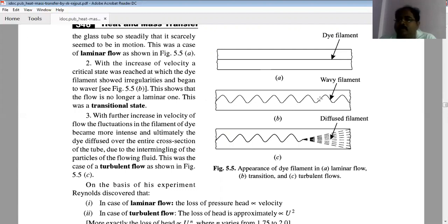This is the transitional state. When we completely open the mouth of the valve, the turbulence becomes more intense and ultimately the dye diffuses over the entire cross section of the tube. This region is called turbulent flow.